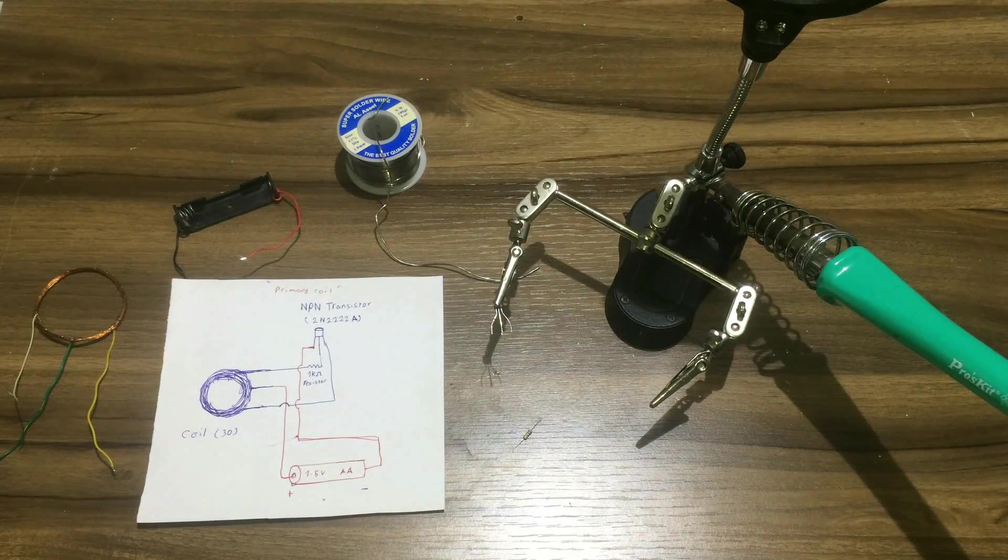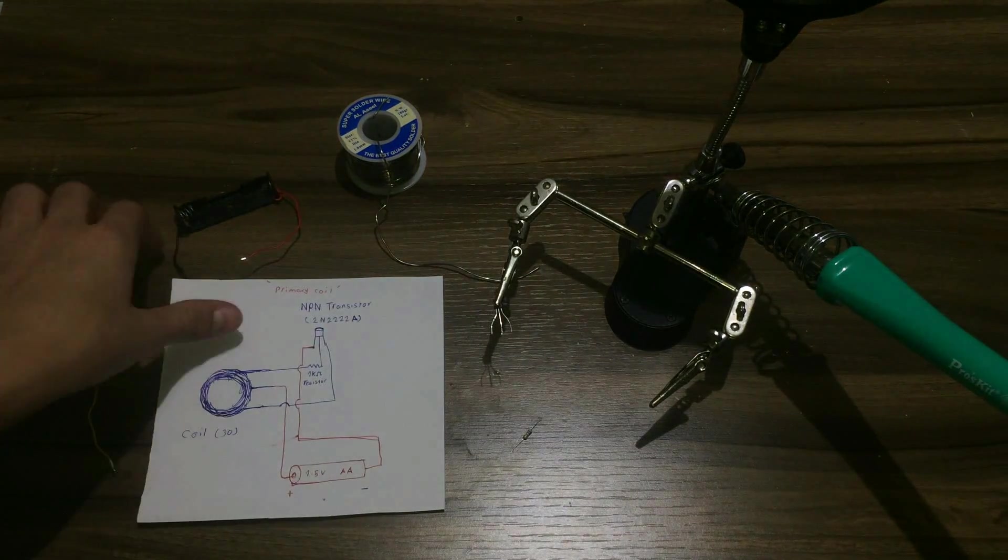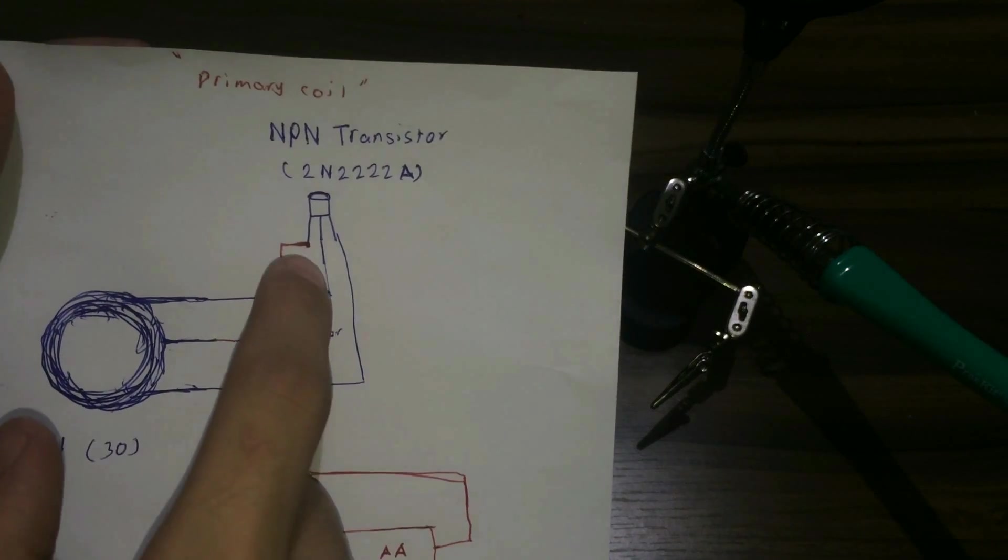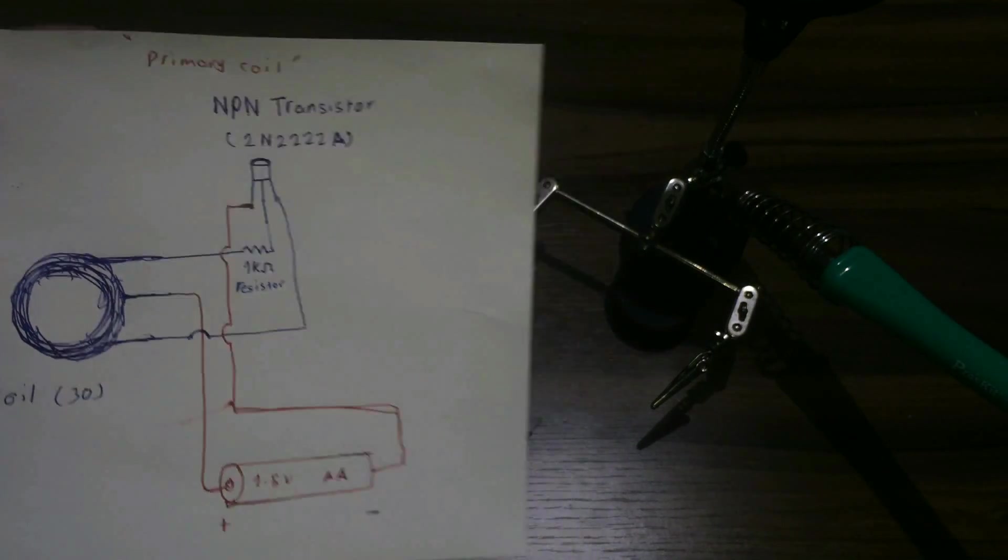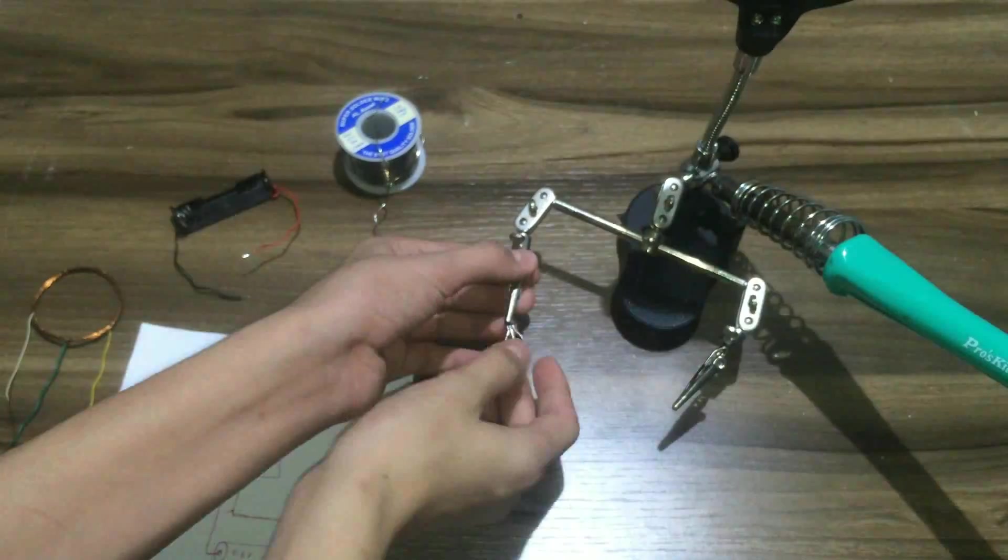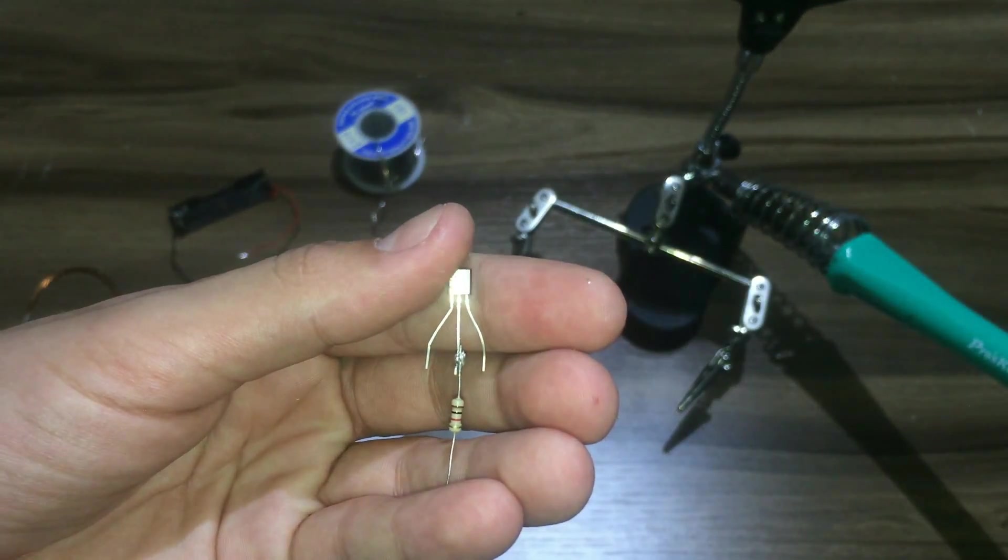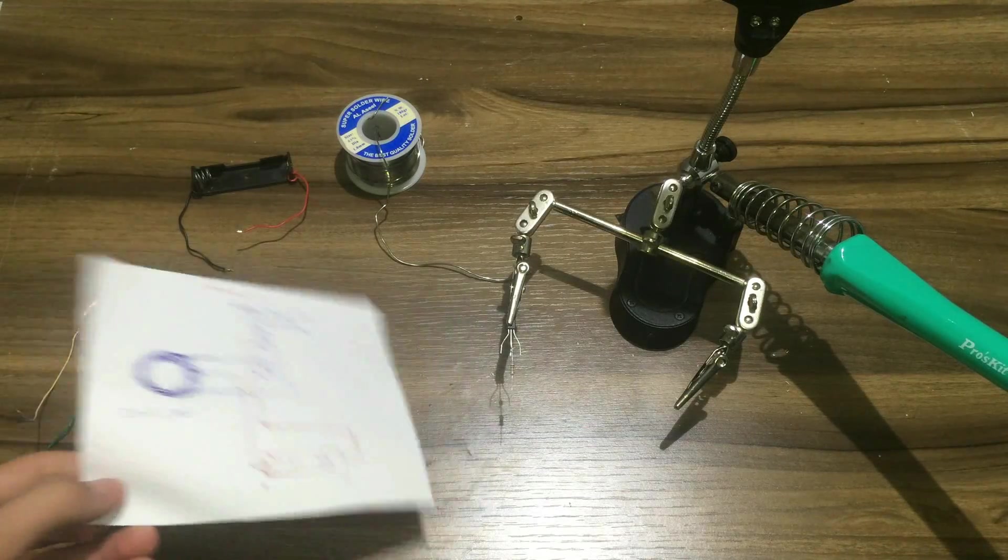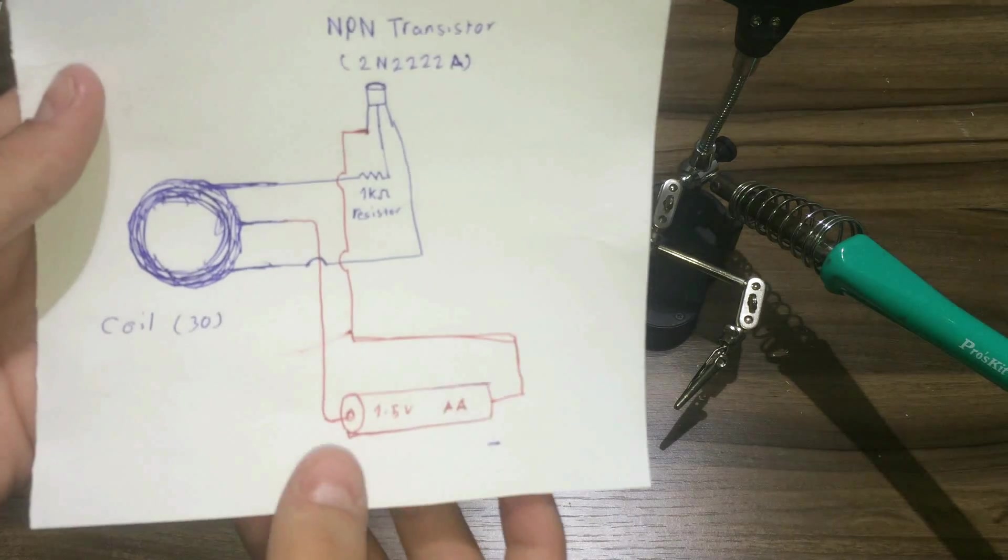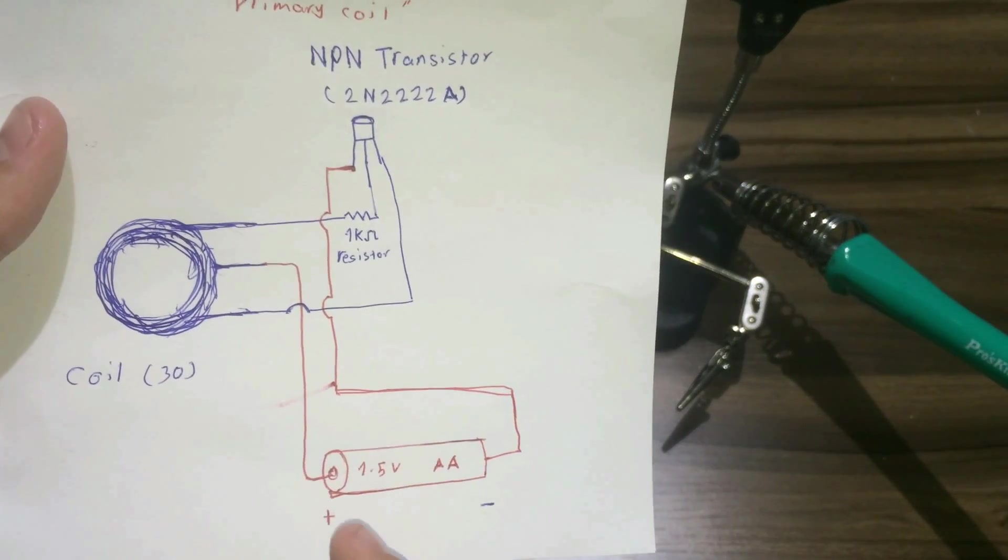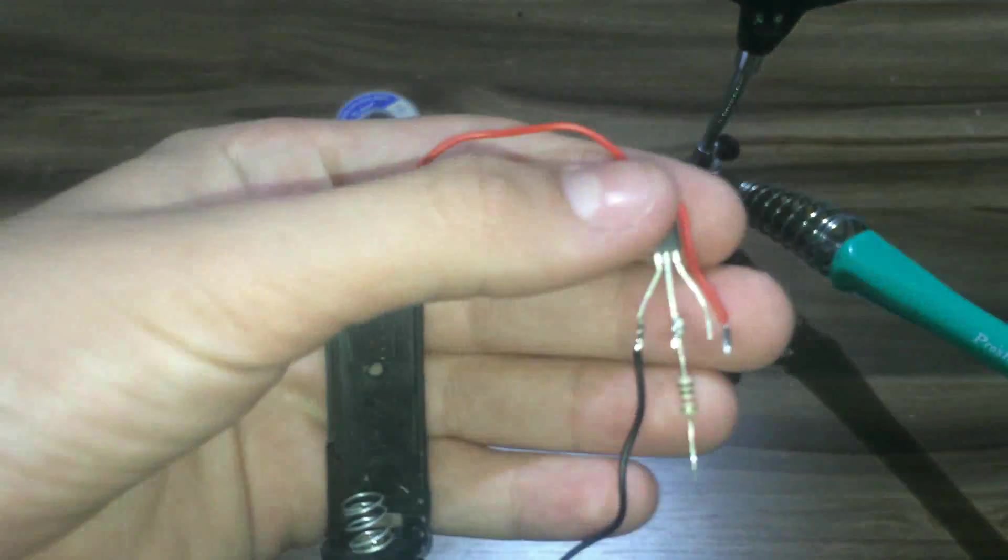Now I will start making the transmitter circuit or the primary coil. I will add the 1K resistor to the base of the transistor or the middle pin. After that, I will connect the left pin of the transistor to the negative side of the battery.